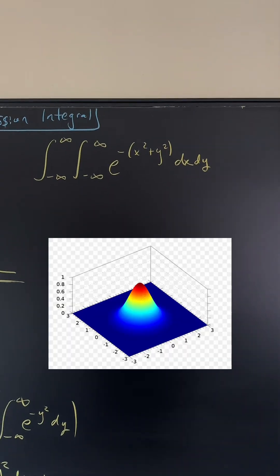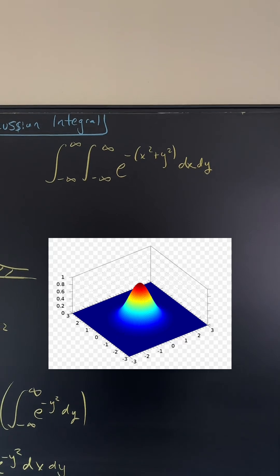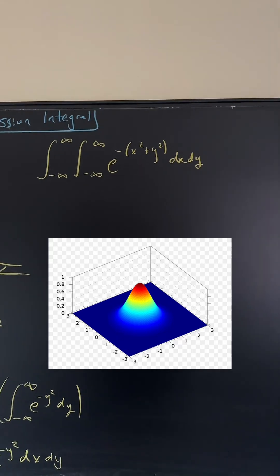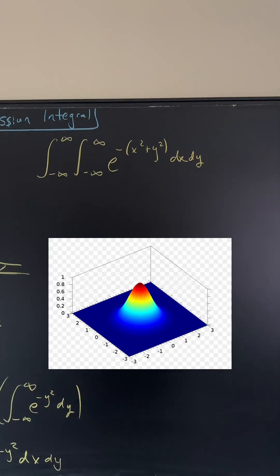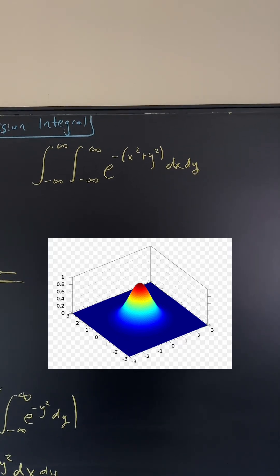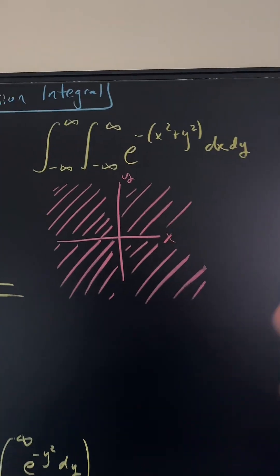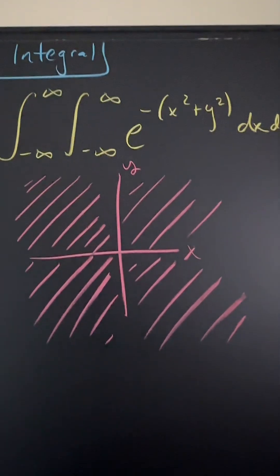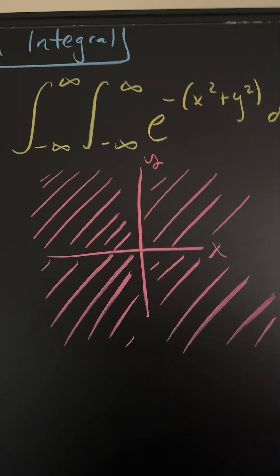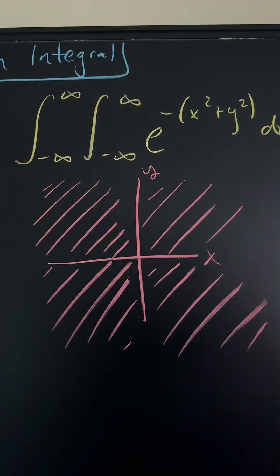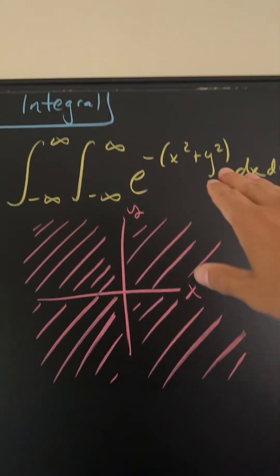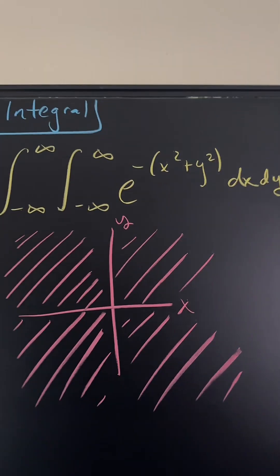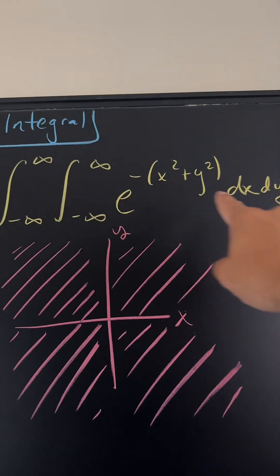Just like a single integral represents the area underneath a curve, a double integral represents the volume of a shape. If you graph this function in a 3D plane, it looks sort of like a little pimple because it sticks out in the middle, while the x and y values stretch from negative infinity to infinity. Looking at the xy plane from the top, x and y both go from negative infinity to infinity. Integrating this is just as difficult, but we have a beautiful relationship: x squared plus y squared.